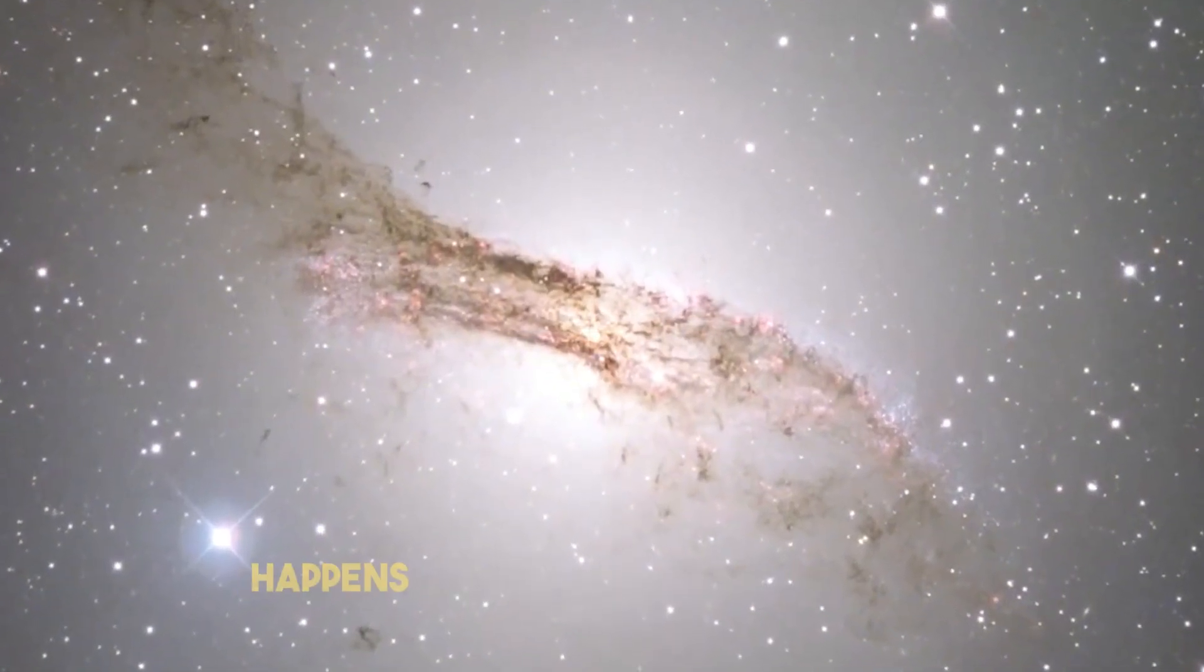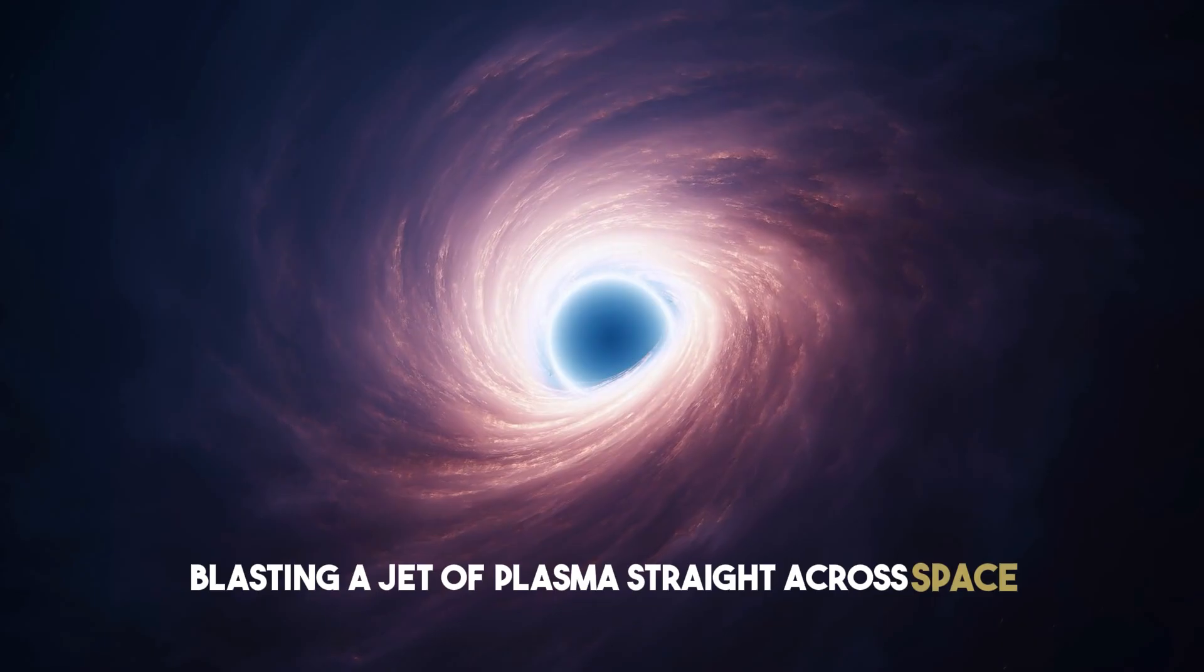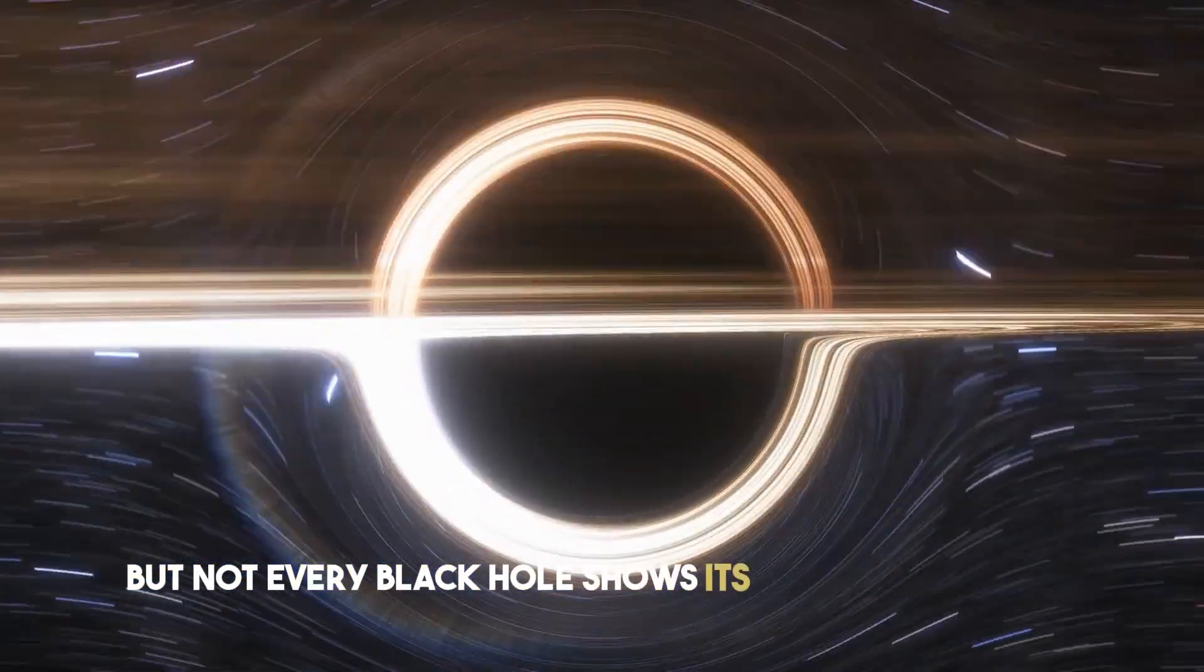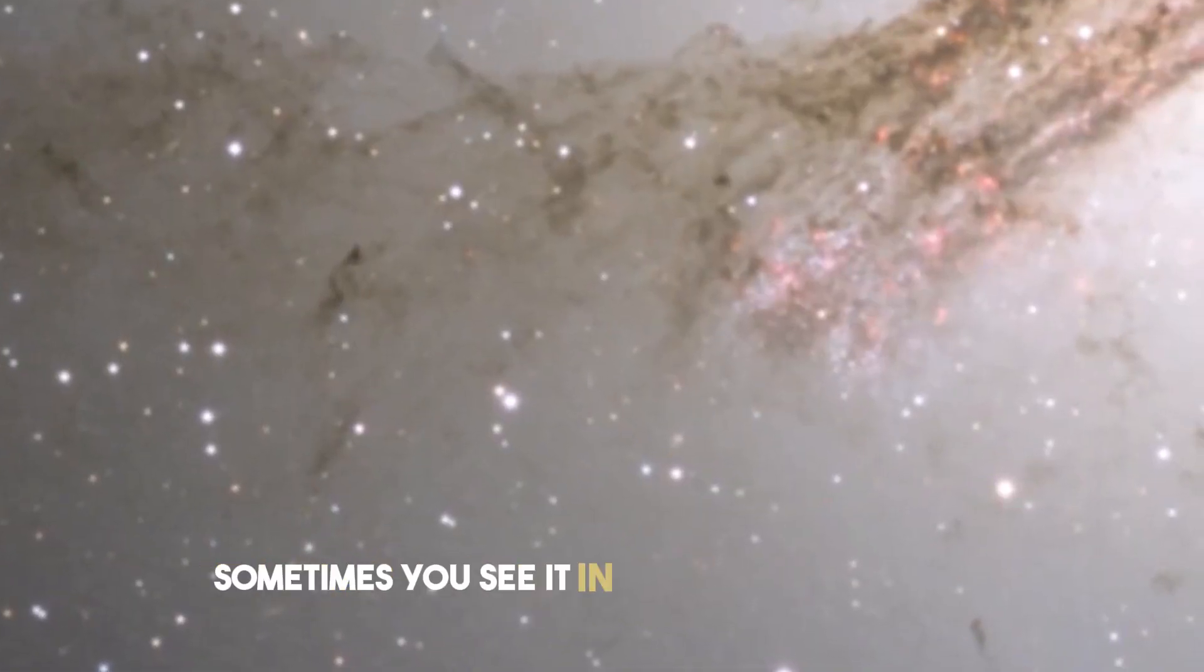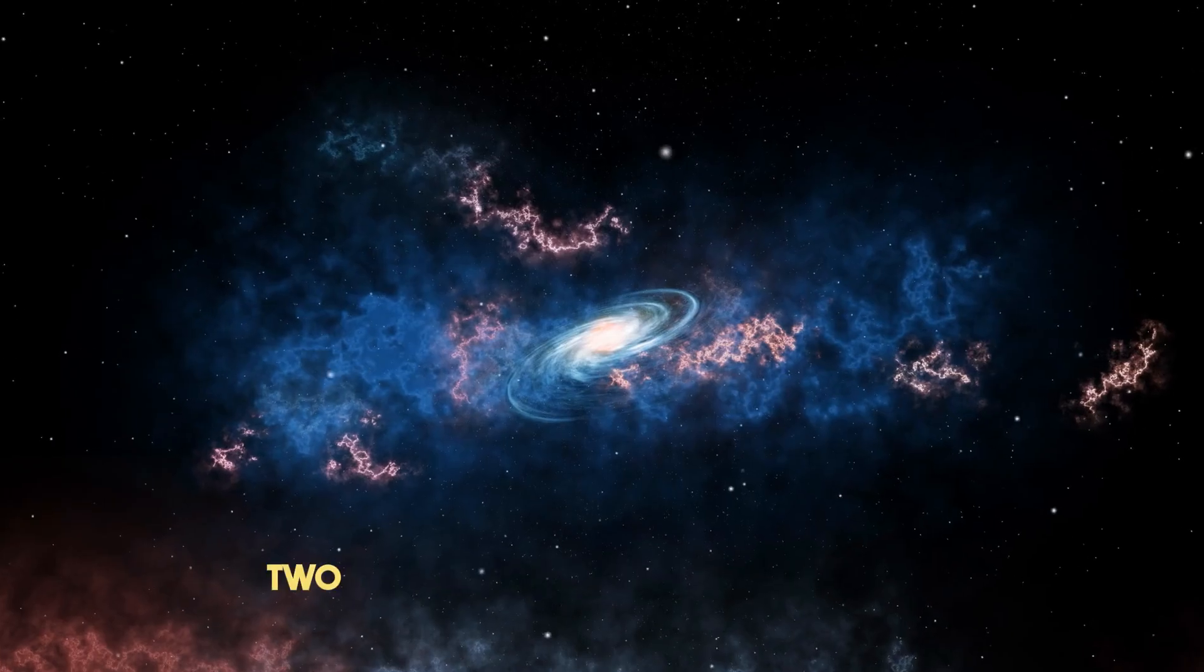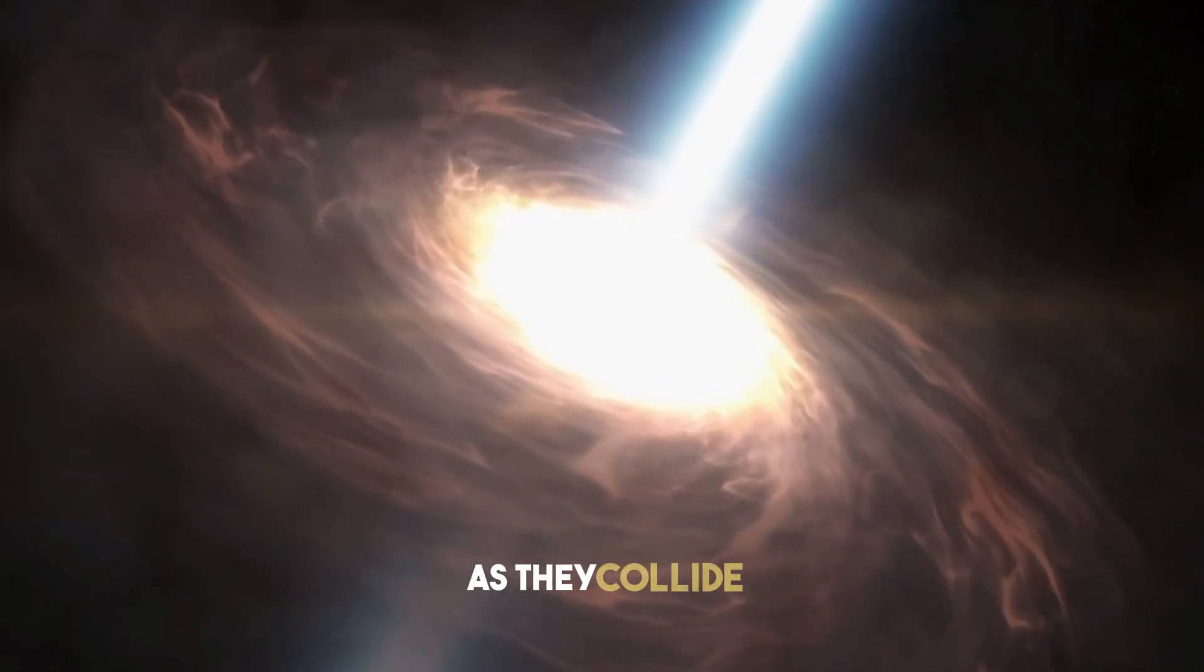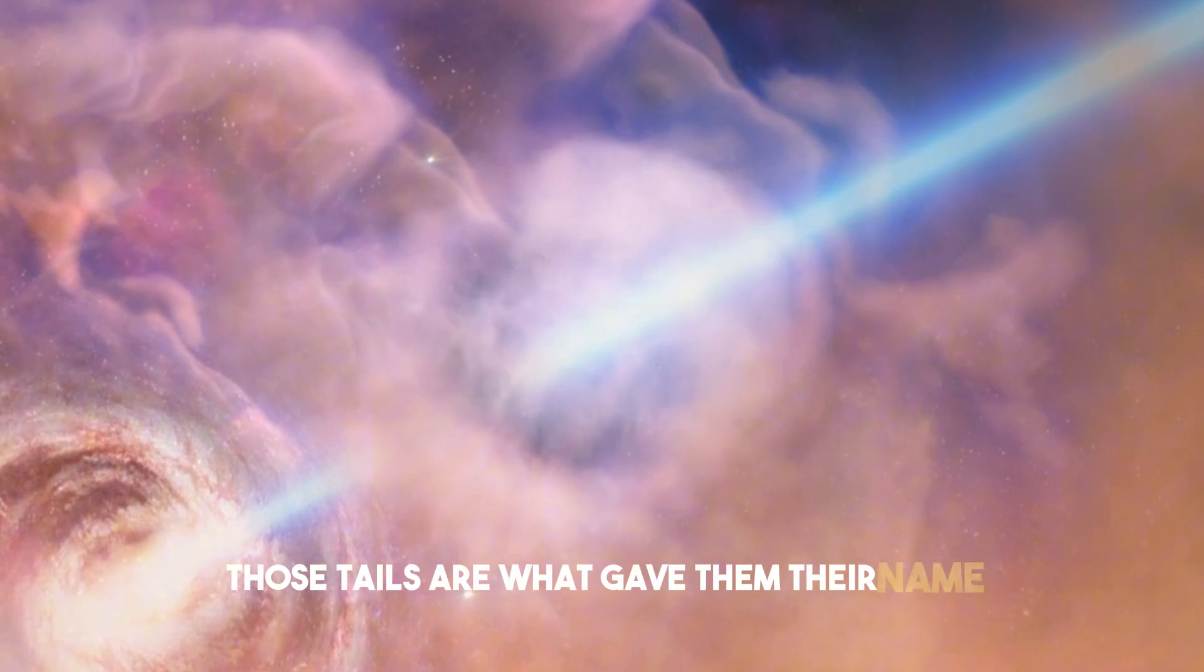Centaurus A shows what happens when a black hole cuts loose, blasting a jet of plasma straight across space. But not every black hole shows its power so directly. Sometimes you see it in the scars left behind. That's where the mice galaxies come in. Two spirals locked in a violent dance, dragging out long tails of stars and gas as they collide. Those tails are what gave them their name. Thin, stretched streams that look like trails behind mice scurrying away.